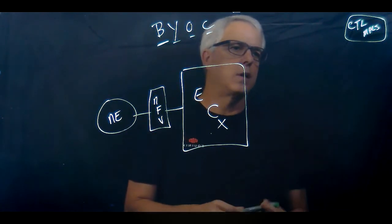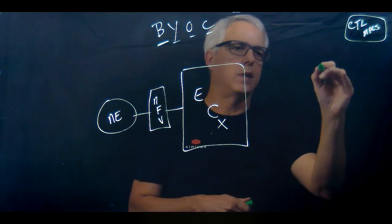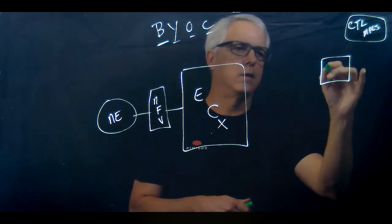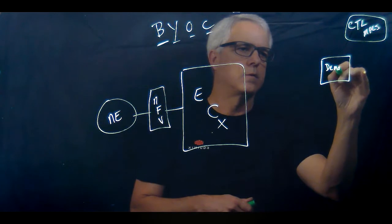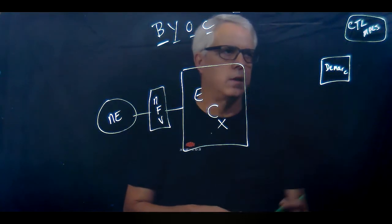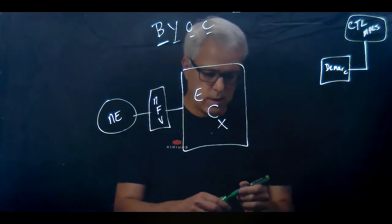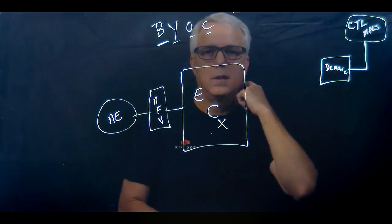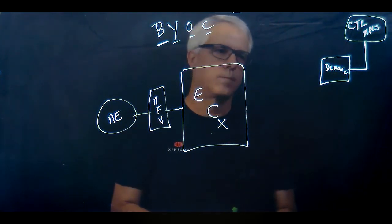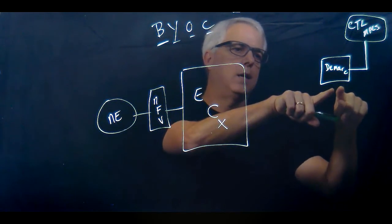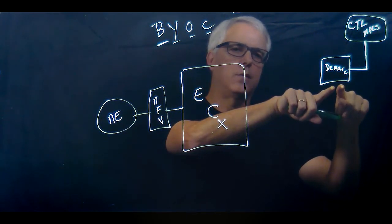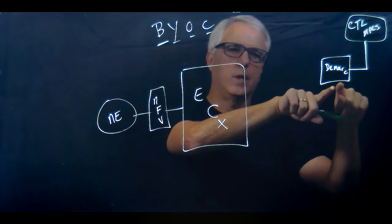The way it would work is the customer would order an MPLS circuit here and it would get terminated into the DMARC. Let's just put the CenturyLink DMARC right there. A circuit gets run, they order the circuit to the IBX address that they've selected, and they order a circuit into that IBX and it gets terminated into the DMARC.